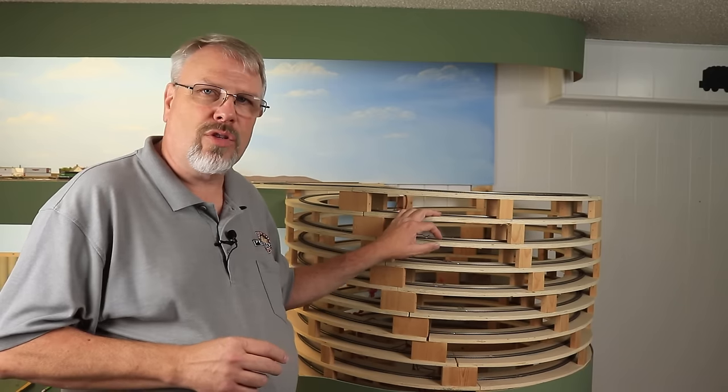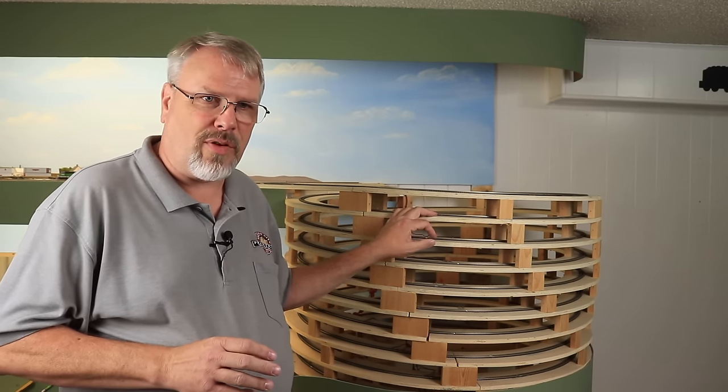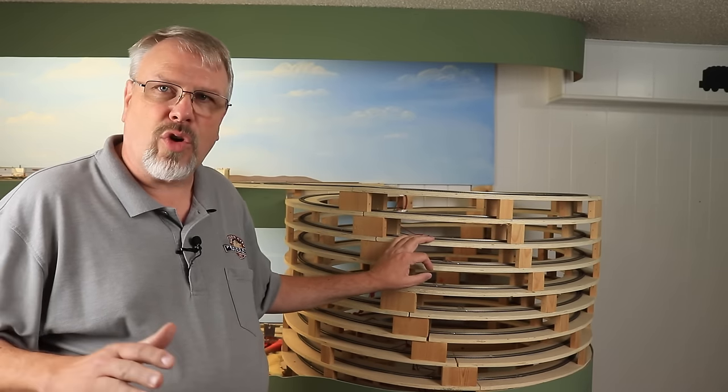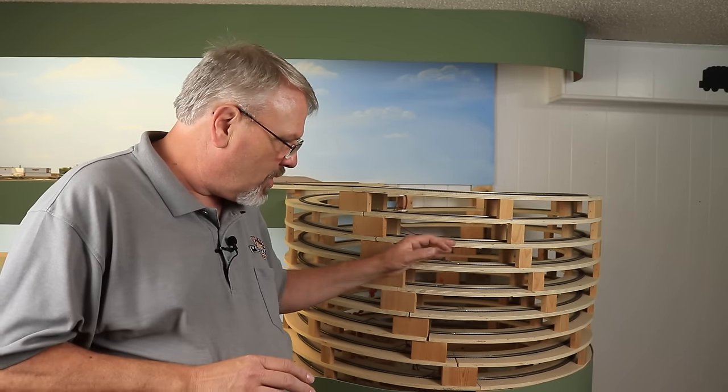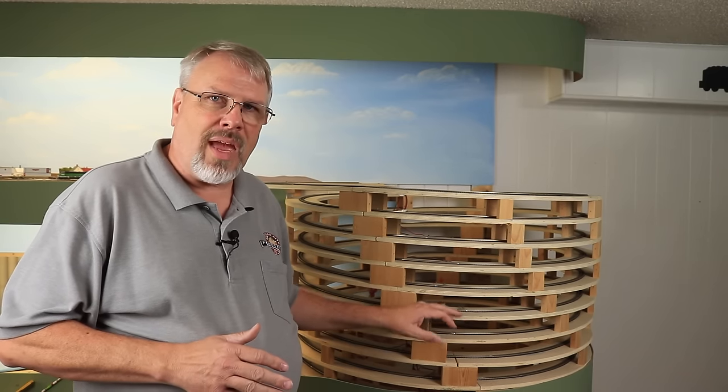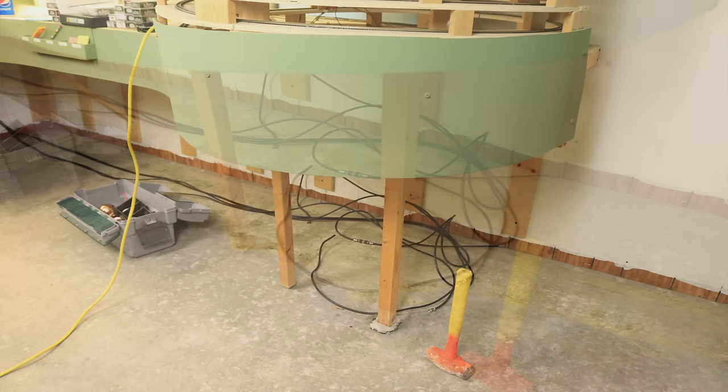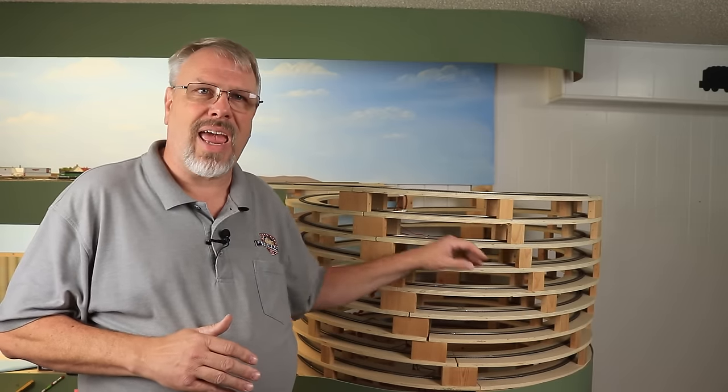Now there were a couple of things that I told you that I did on this layout that I wanted to definitely do differently on the new Helix. One thing was, when I built this, this room was already finished when we moved in. It had carpet down, and so this Helix is mounted to the wall in the back, but it needed some support in the front, and so I put it on a couple of legs, and the only option I had was to set those right into the carpet. Over time, they settled into the carpet more and more, and it actually allowed this front corner of the Helix to sag a little bit.